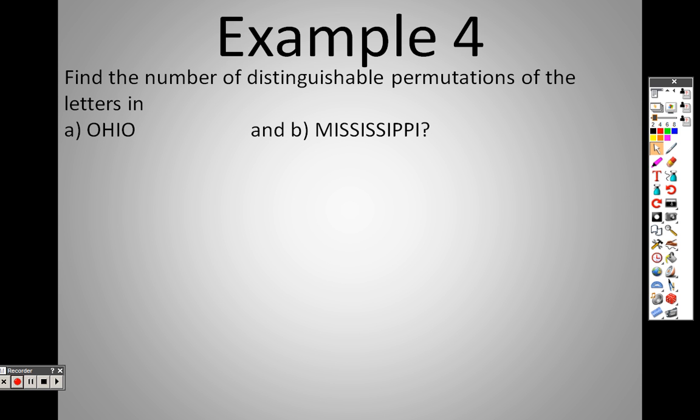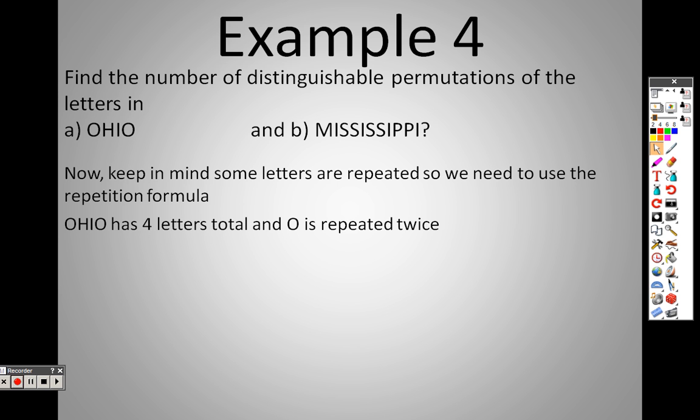Find the number of distinguishable permutations in the letters in Ohio. This is where you see repetition. How do I know? How many O's do you see? I see two. Since there are two O's, I'll use the second permutation formula. There's four total letters in Ohio, and the O repeats twice, so it's 4! over 2!. That's 4×3×2×1 over 2×1. The 2×1 cancels out, so I'm left with twelve.